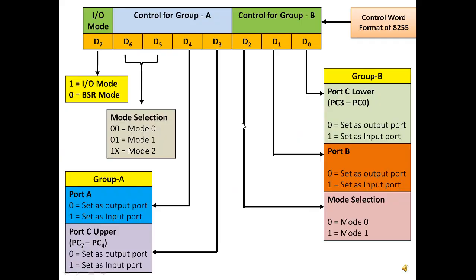Let us see the control word format of 8255. The format is 8 bits wide. In this format, Group B, Group A, and IO mode are programmed. For control of Group B, there are three bits: D0, D1, and D2.